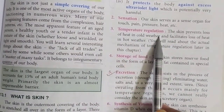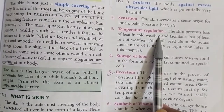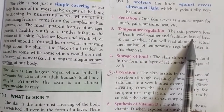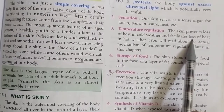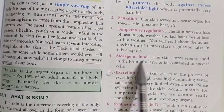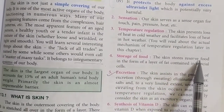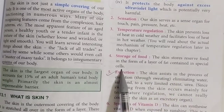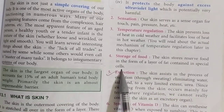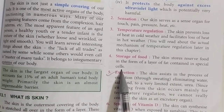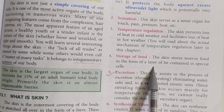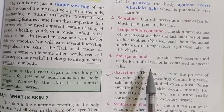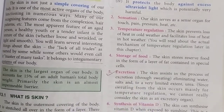Temperature regulation is another function; we will discuss how skin regulates body temperature in the last topic of this chapter. Skin also stores reserve food in the form of a layer of fat in special cells deposited beneath the layers of skin, which is what makes us obese.